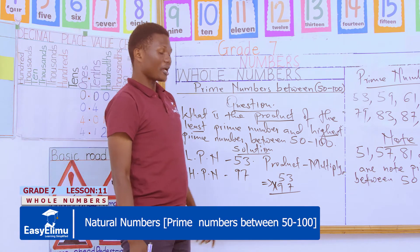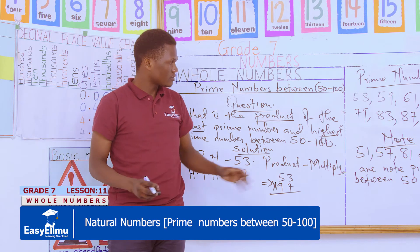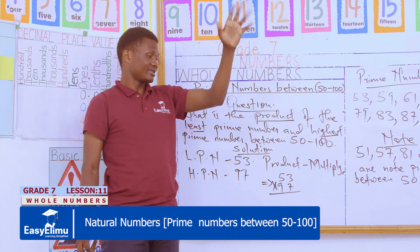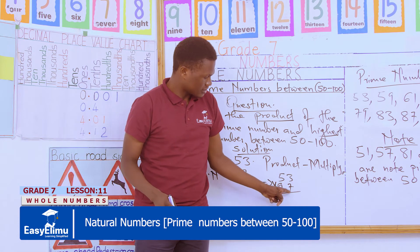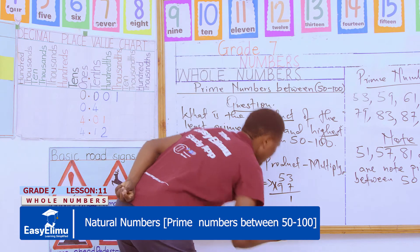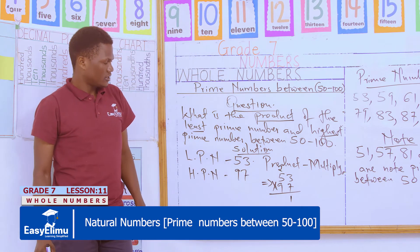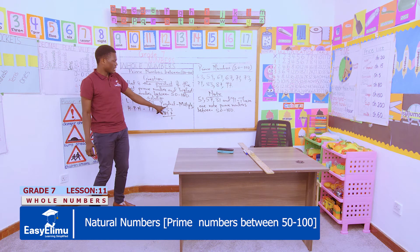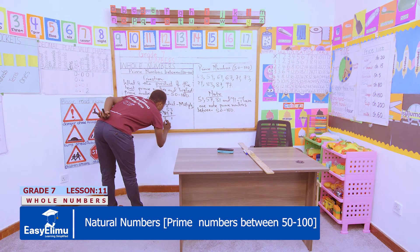We are going to multiply. You need to be well acquainted with your multiplication table — something discussed in grades 4, 5, and 6. What is the product of 3 and 7? — 21, correct. So we write 1, carry 2. 7 by 5 — 35, correct. Then we add 2, so 35 plus 2 is 37. We write 37.